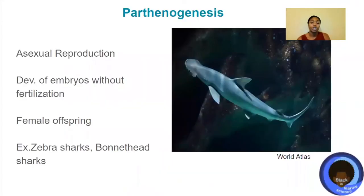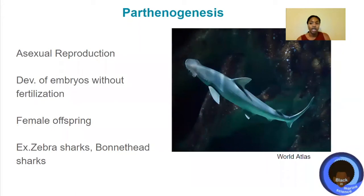Parthenogenesis is asexual reproduction that can occur in fish — it's the development of embryos without fertilization. Because of this, they can only produce female offspring. Even though this isn't the main reproductive strategy of sharks like zebra sharks and bonnethead sharks, it has been observed in these species as well as other fish.